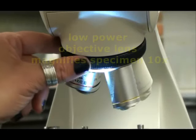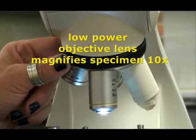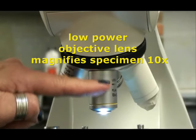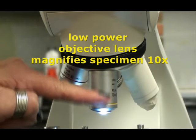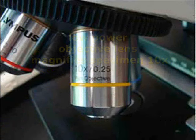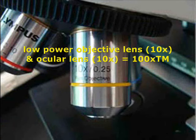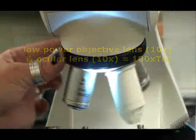The next objective lens is the low power lens. It has a yellow band around it and it magnifies objects ten times actual size. So the total magnification when using my low power lens is the ocular, which is ten times, multiplied by the low power lens, which is ten times magnification as well, for a total magnification of 100 times actual size.